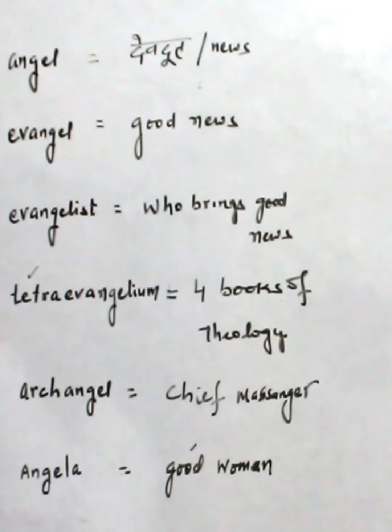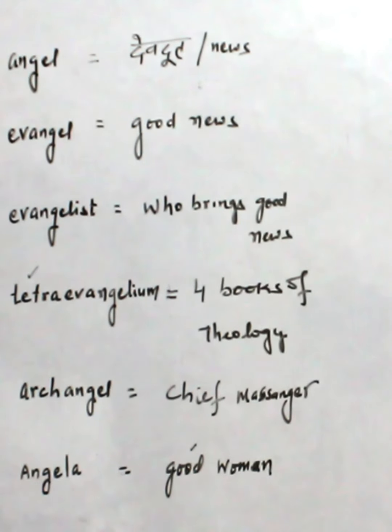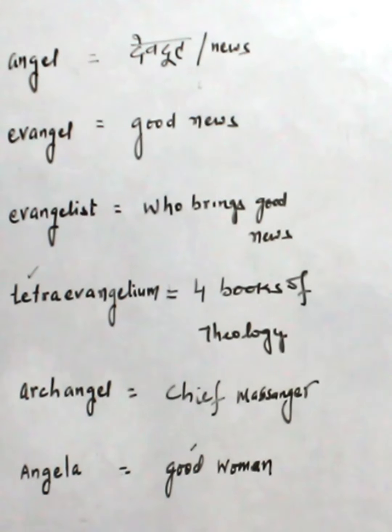So, Evangelist means who brings good news. Tetra Evangelium means four books of theology which are studied in Judaism. And Evangelist means who brings good news.